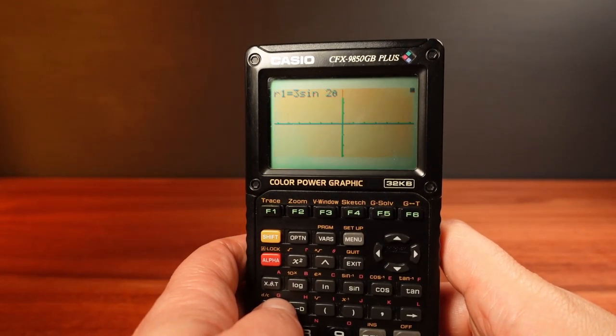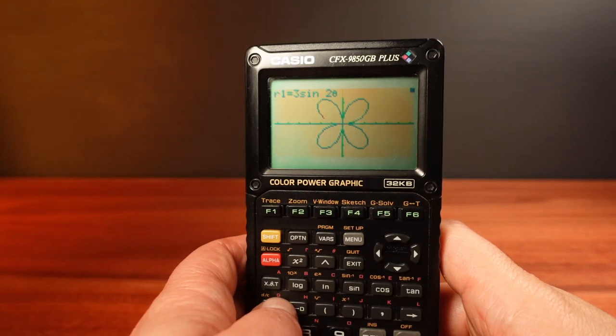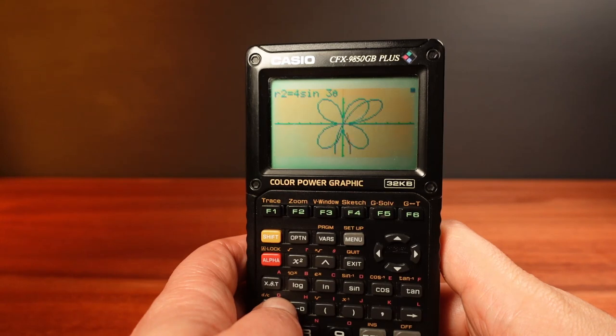They were making an inexpensive graphing calculator, with the ability to represent different graphs in a few different colours at an affordable price. In this, they definitely succeeded. And the result was a colour LCD that was much cheaper to produce than standard RGB LCDs.